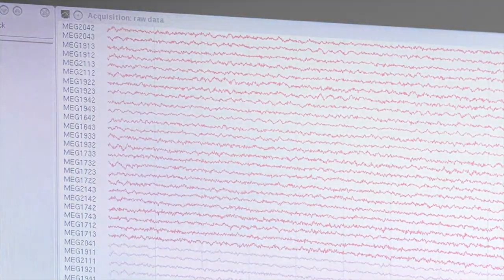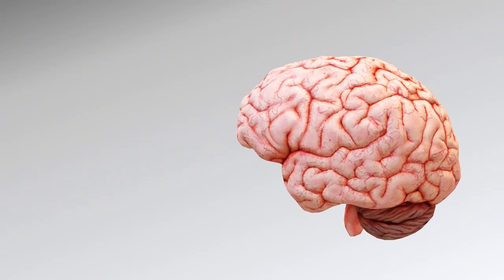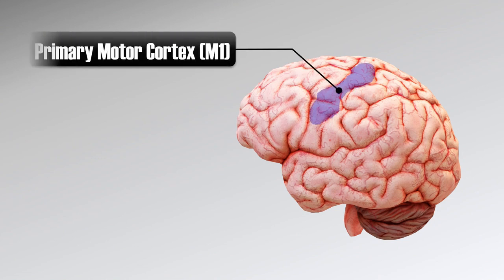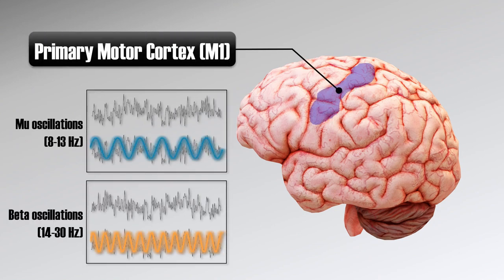In the motor cortex, mu and beta rhythms can be observed, which are both tightly linked to motor cortex activation and resulting muscle responses.